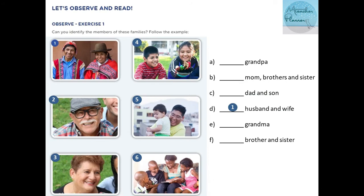In this part, let's observe and read. Observe exercise one: Can you identify the members of these families? Follow the example. In this exercise you can see six pictures and six options with letters A, B, C, D, E, and F. We have to write the correct number in each part.